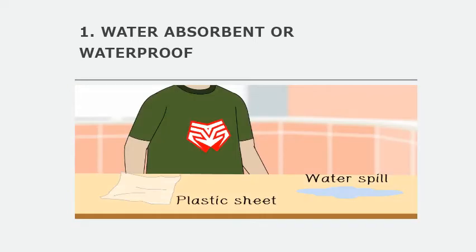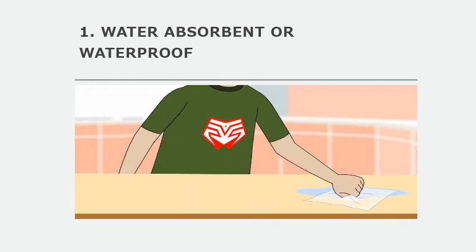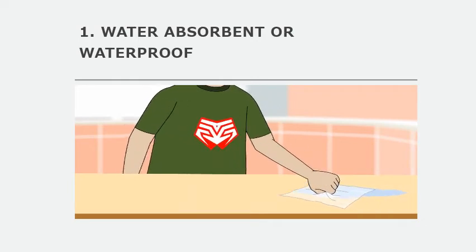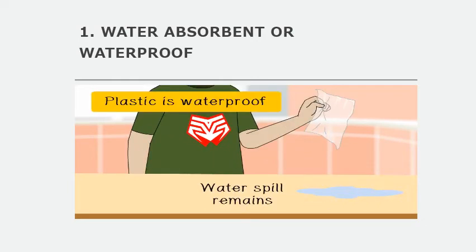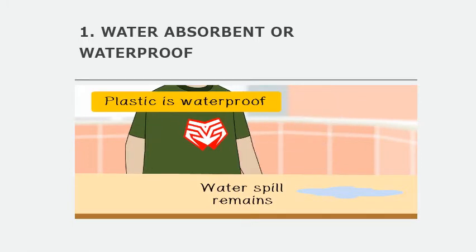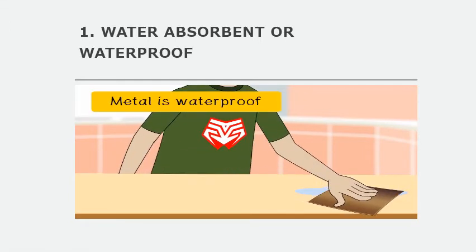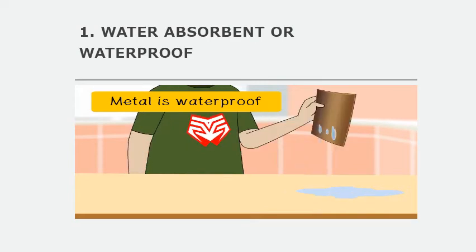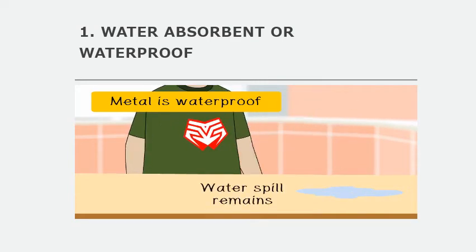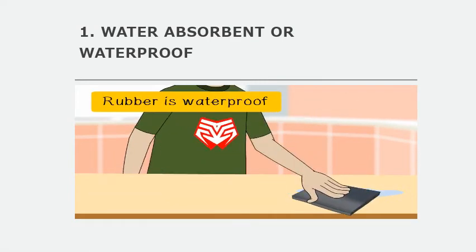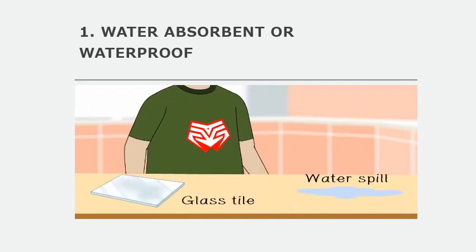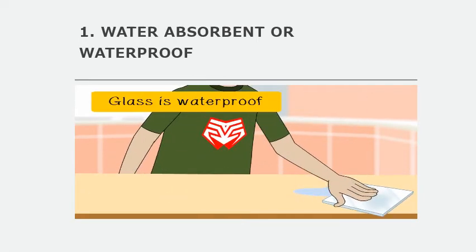Some objects do not absorb water and some do. The plastic sheet is not suitable for wiping water spills on any surface. This is because plastic is waterproof, so it does not absorb water. Similarly, materials such as metals, rubber, and glass are waterproof. They do not absorb any water. The water spill remains. Rubber is waterproof, it does not absorb water. Glass is waterproof, it does not absorb water.